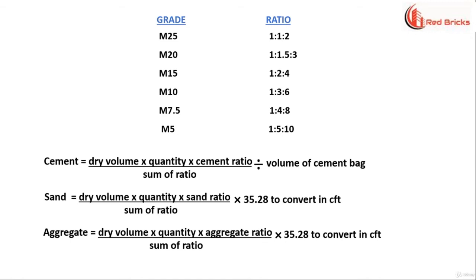For finding the quantity of cement, we make use of this formula: dry volume into quantity into cement ratio divided by sum of ratio whole divided by volume of cement bag.